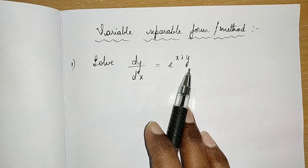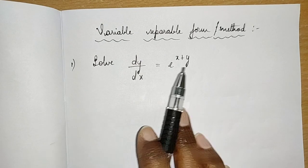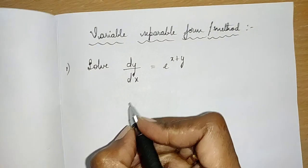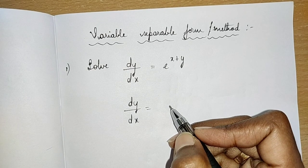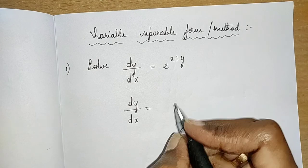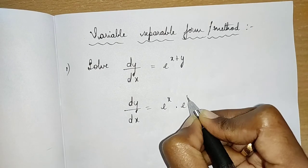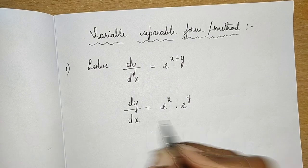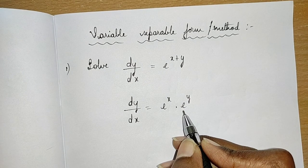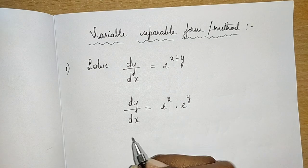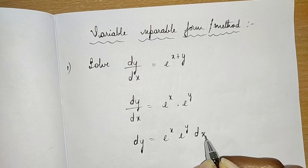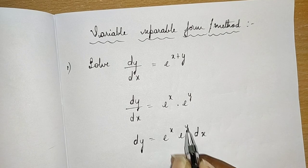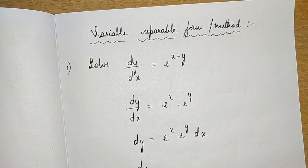We bring all y terms with dy and all x terms with dx. First, e^(x+y) can be written as e^x · e^y using exponential laws. After separating variables: dy/e^y = e^x · dx.